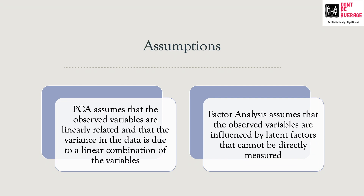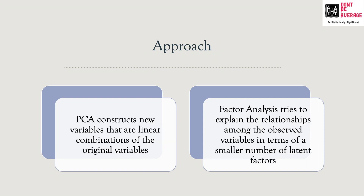In terms of assumptions, PCA assumes that the observed variables are linearly related and that the variance in the data is due to a linear combination of the variables. But in the case of factor analysis, it assumes that the observed variables are influenced by some other factors that cannot be directly measured.